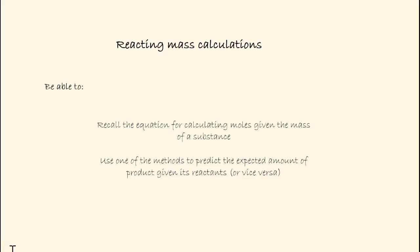By the end of this lesson you should be able to do the two following things. You should be able to recall the equation for calculating moles given the mass of a substance, and secondly you should be able to use one of the methods to predict the expected amount of product given its reactants, or vice versa — the amount of reactants given its products.